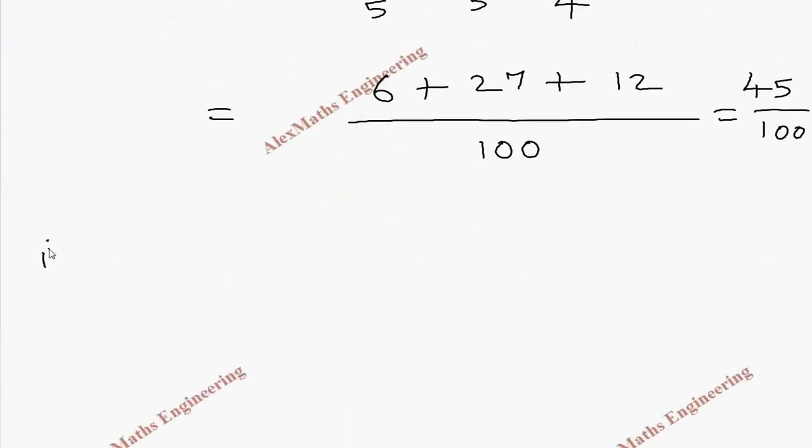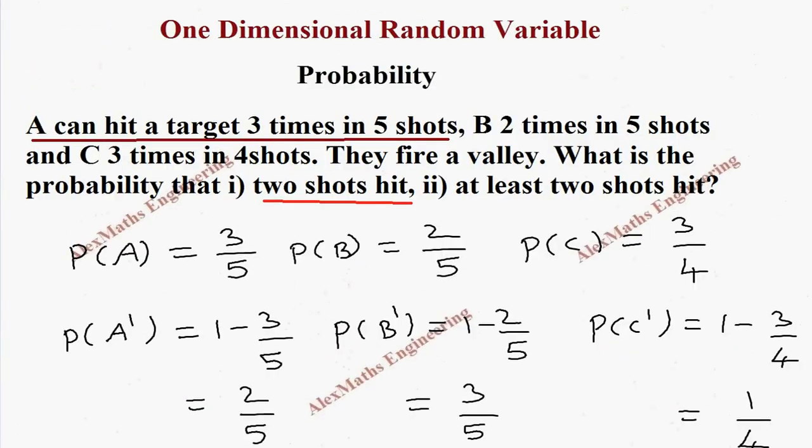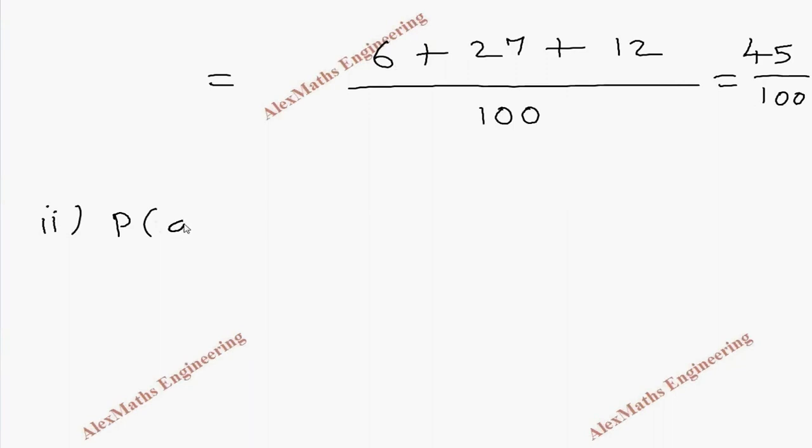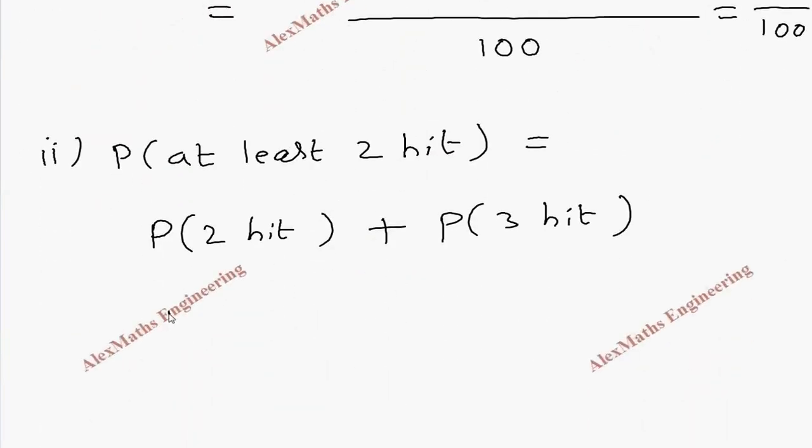Then coming to subdivision 2. We have given at least 2 shots hit. It is either 2 hit or 3 hit. So P of at least 2 hit equals P of 2 hit or P of 3 hit. Already 2 hit we have calculated in the first subdivision. So we can use the value 45 by 100.